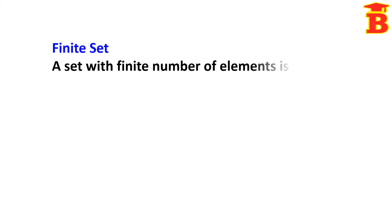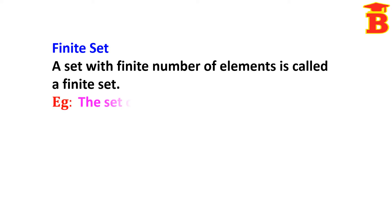Next, finite set. A set with a finite number of elements is called a finite set. Here, finite means countable — if we are able to count the number of elements, then it is called a finite set. For example, the set of family members: we can count the number of members in our family, so it is a finite set.